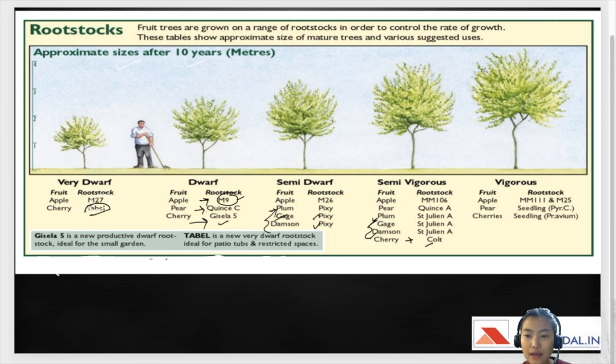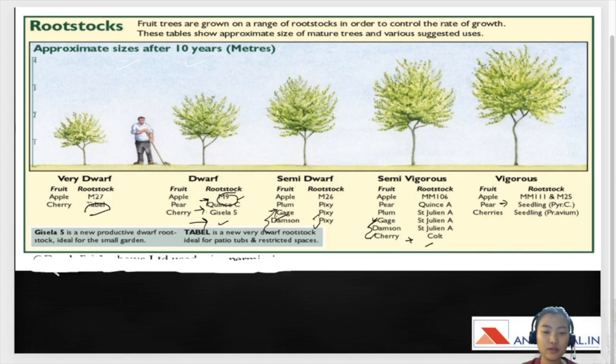For vigorous we have apple, Malling Merton 111 and Malling 25. For pear we have seedling. And for cherries also we use the seedlings. So it's important to know the name of the various rootstocks and its features. It's not necessary that you have to remember all the varieties and all the rootstocks but just the important points. There might be questions on citrus. So what is the rootstock for high density planting in Kinu? If you know the answer, maybe just guess. Please comment in the comment section.